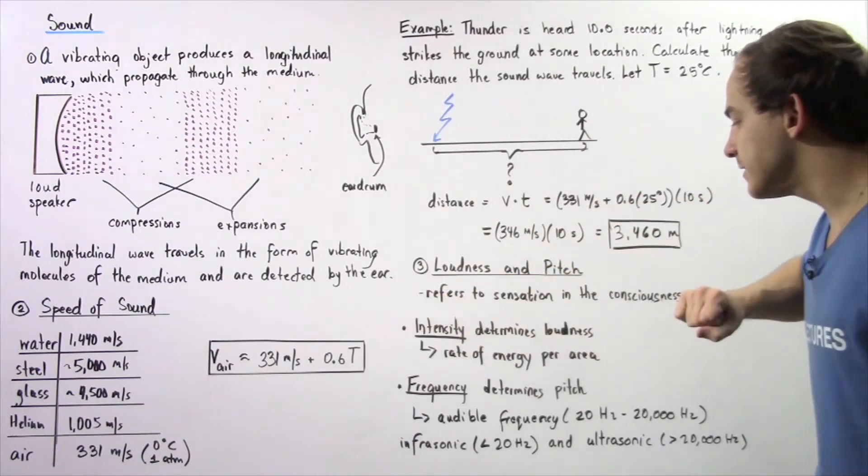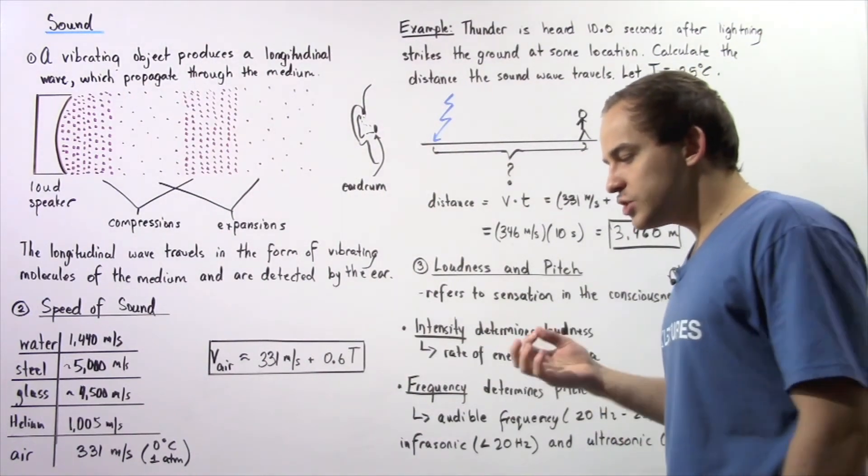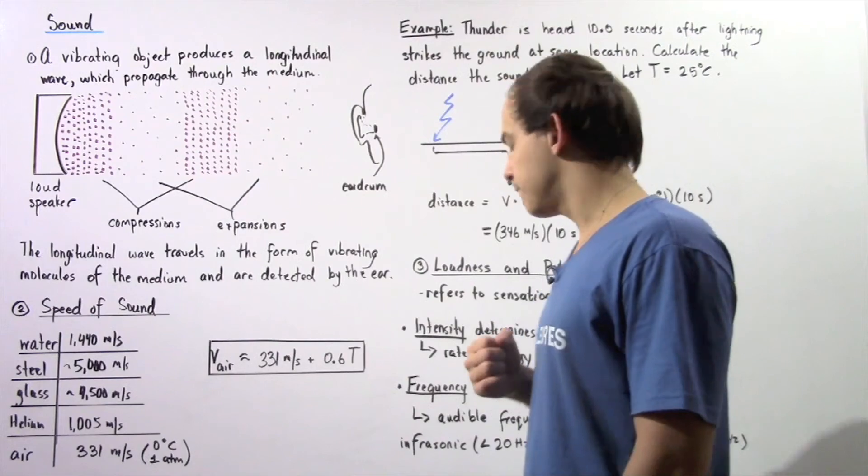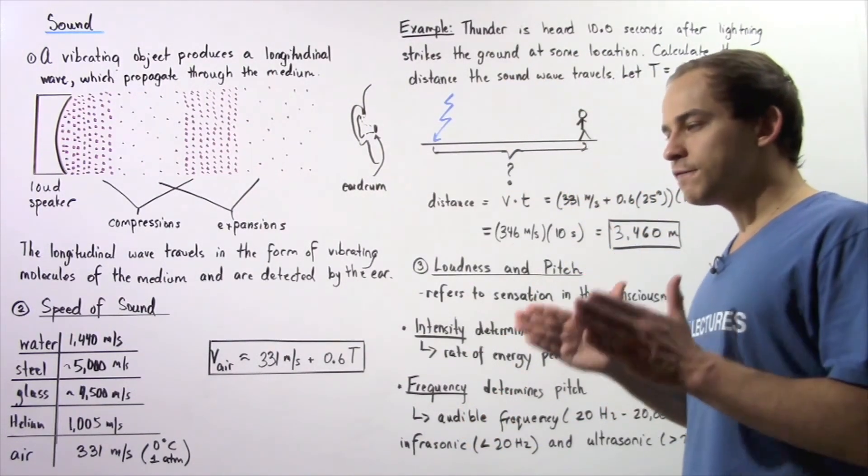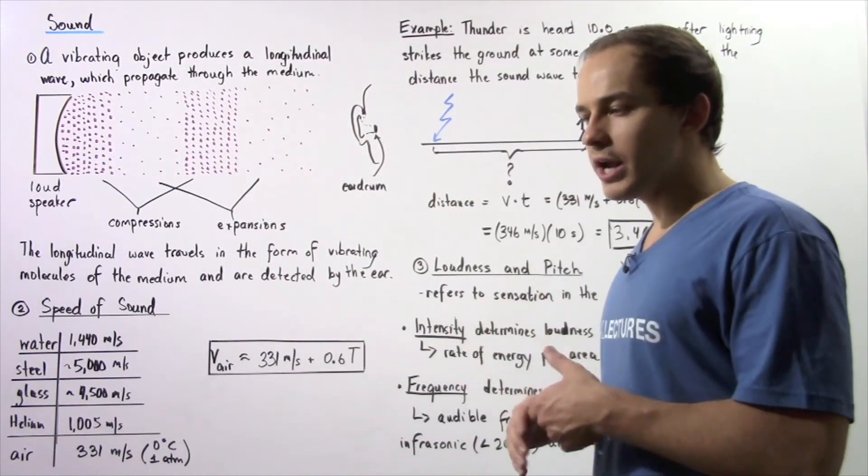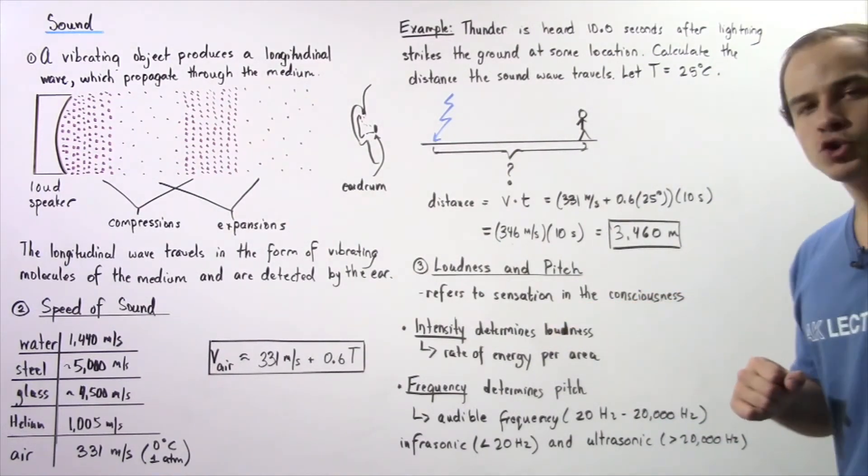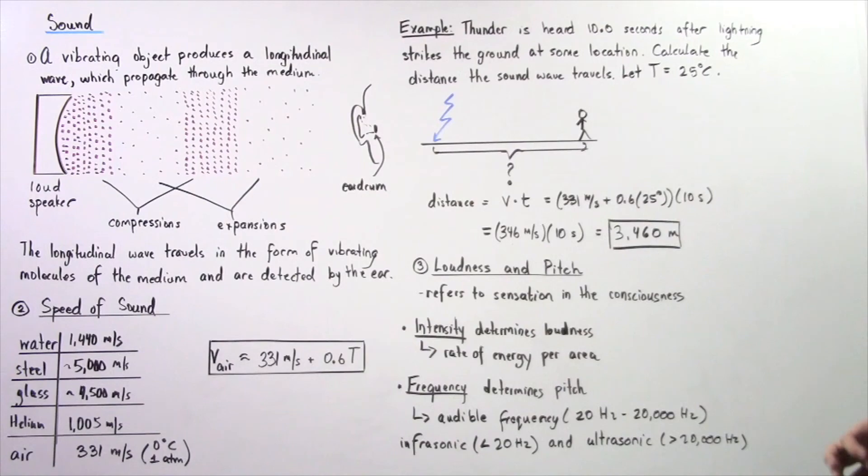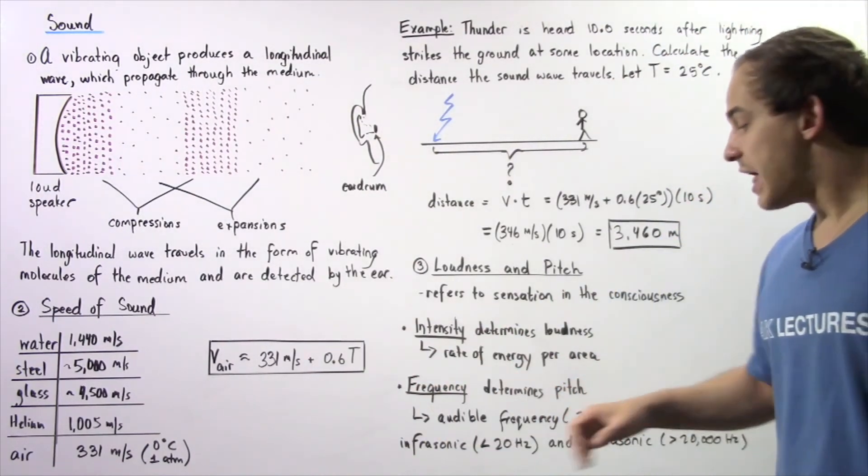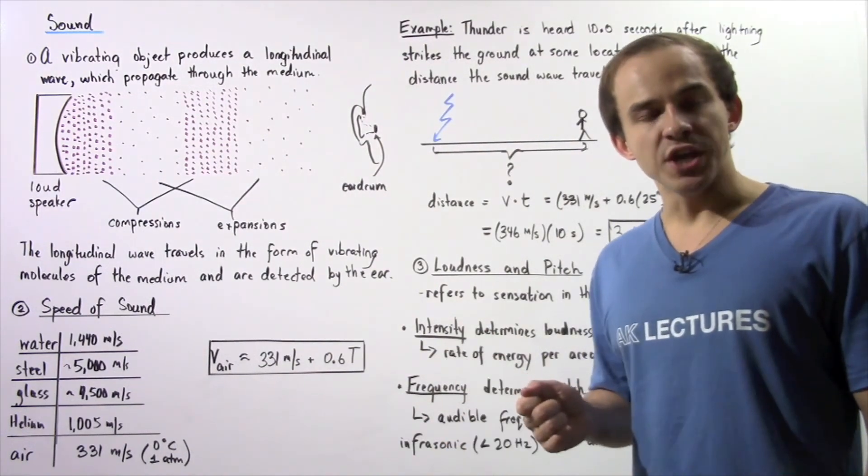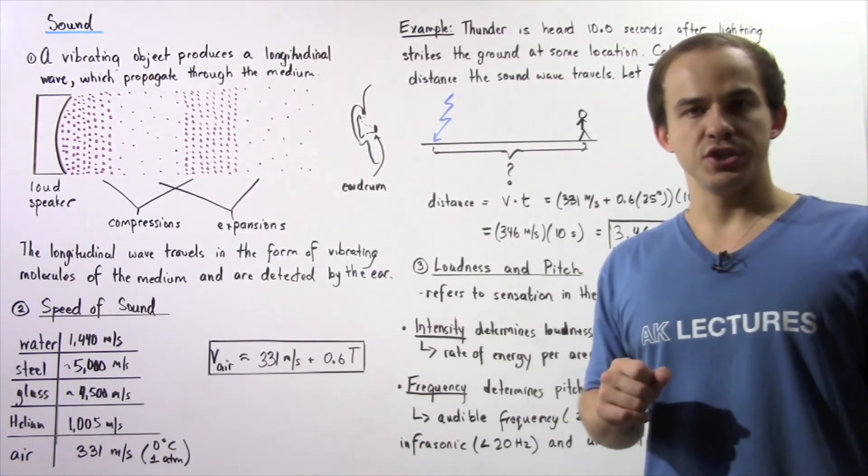The higher the frequency, the higher the pitch. The lower the frequency, the lower the pitch. We talk about something known as the audible frequency. Audible frequency refers to a range of frequency values that the human brain can perceive, ranging from as low as 20 hertz to as high as 20,000 hertz. If the frequency is below 20 hertz, that is known as infrasonic frequency. If it's above 20,000 hertz, it's known as ultrasonic frequency.